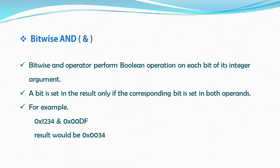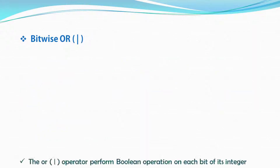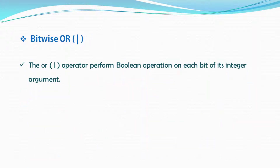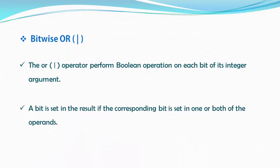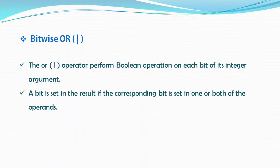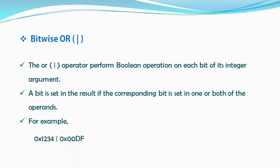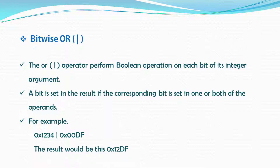The next bitwise operator is OR. The OR bitwise operator performs a boolean operation on each bit of its integer argument. A bit is set in the result if the corresponding bit is set in one or both of the operands. For example, we have two hexadecimal values with the OR operator, and the result would be this.